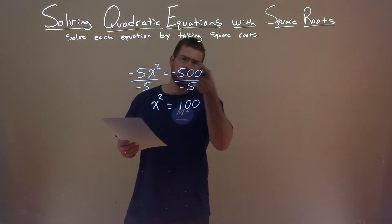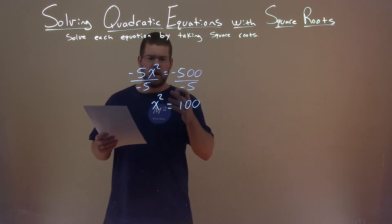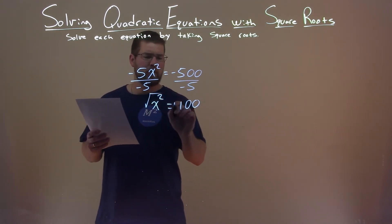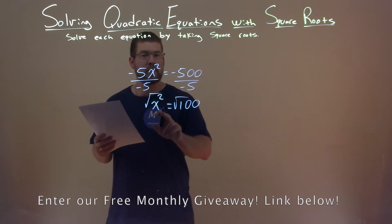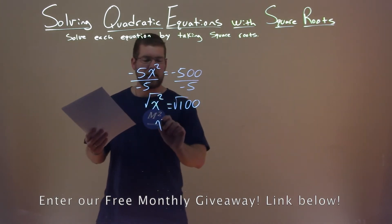Alright, so we have x squared equals 100, where do we go from here? Well, I want to take the square root of both sides, opposite of x squared. Taking the square root eliminates the square here.